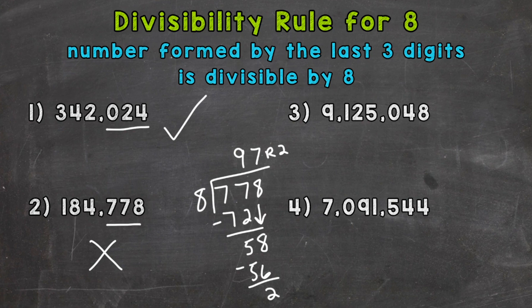On to number 3, where we have 9,125,048. So our last three digits gives us 48 there. And 48 is divisible by 8. 48 divided by 8 equals 6 without a remainder. Since those last three digits are divisible by 8, 9,125,048 is divisible by 8 as well.